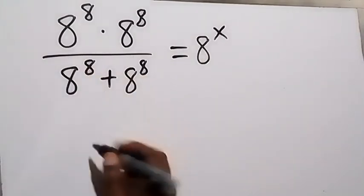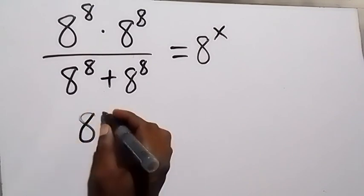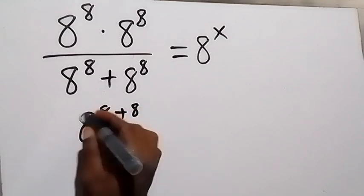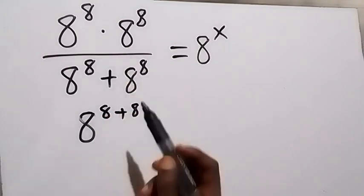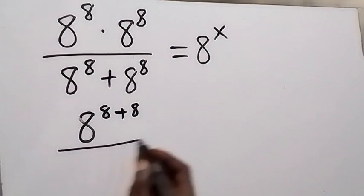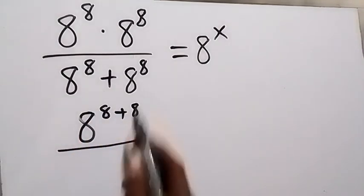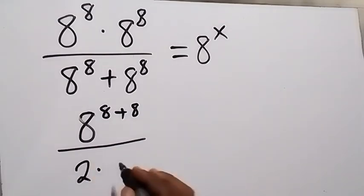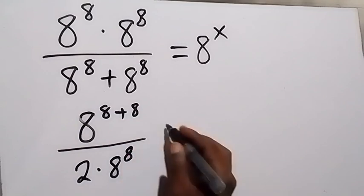We can rewrite the numerator as 8 raised to power 8 plus 8. From the law of indices, since we have the same base, we can add the powers. The denominator has 8 raised to power 8 plus 8 raised to power 8, which is the same as 2 times 8 raised to power 8.